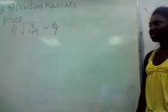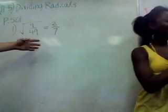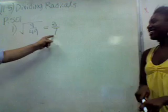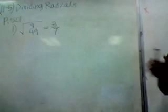So you get 3 7ths? Yes, absolutely. It's as simple as that. You take the square root of 9 and the square root of 49, and your answer is 3 7ths. Thank you, Olivia.